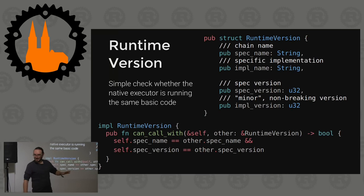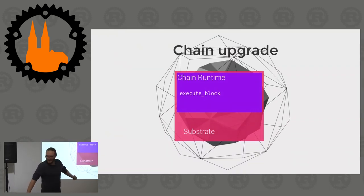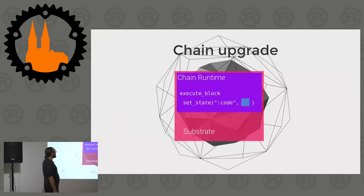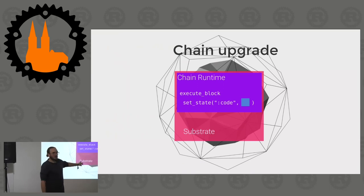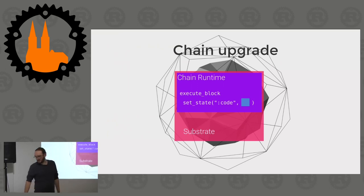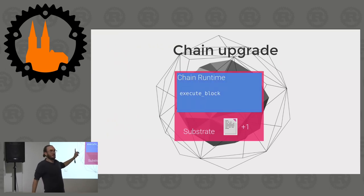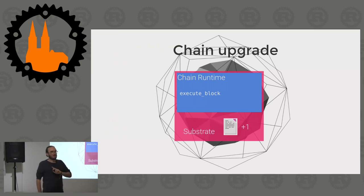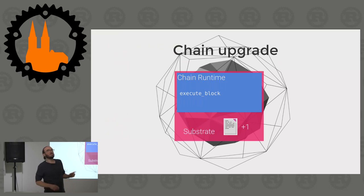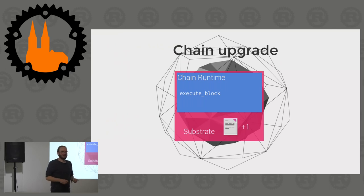What this all means is that our executeBlock function can actually call setState with a new piece of code while running its block - which means that from the next block onwards, we're not executing this runtime anymore, we're going to be executing that newly provided runtime. Without restarting, without the person running that node even knowing it happened, or having to agree to it at all, the chain can upgrade itself. And that's because of Wasm. And that's awesome.